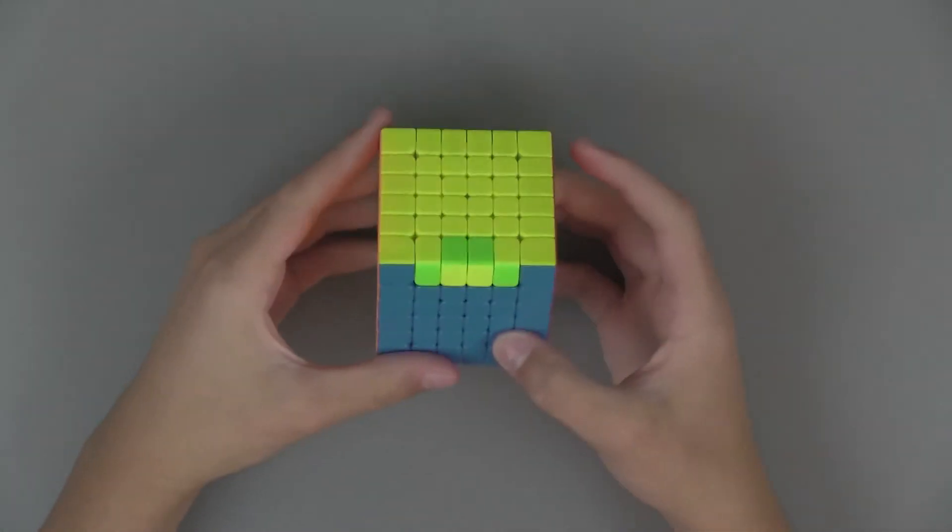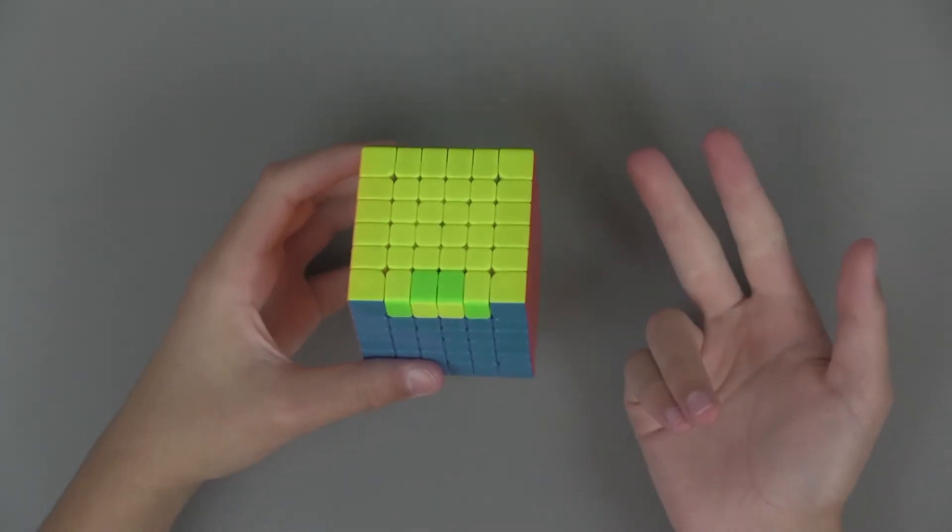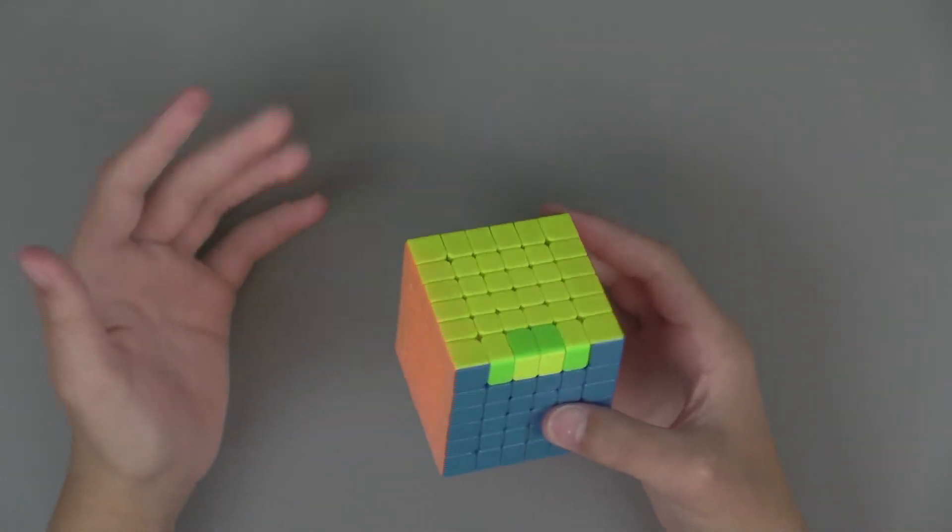Now onto 6x6, the worst of them all. It has edge parity, OLL parity, and PLL parity. So it's actually quite simple.